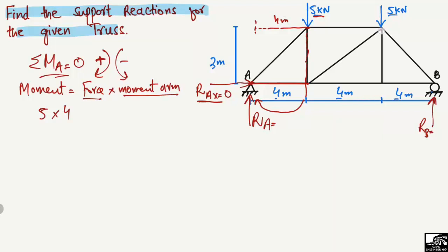The second force creating a moment about point A is also 5 kN acting downward, again producing a clockwise moment. The perpendicular distance from this load to point A is 4 + 4 = 8 meters. So the second moment is 5 × 8 = 40 kN·m.